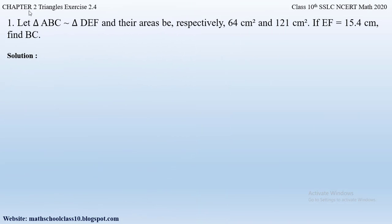Question number one from exercise 2.4, chapter 2, Triangles: Let triangle ABC be similar to triangle DEF and their areas be respectively 64 cm² and 121 cm². If EF is equal to 15.4 cm, find BC. So here we have two similar triangles ABC and DEF. The area of triangle ABC is 64 cm², area of triangle DEF is 121 cm², side EF is 15.4 cm, and we need to find BC.